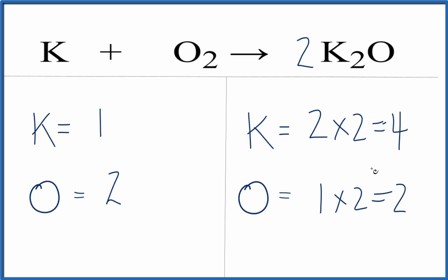That's not a problem though, because we have K all by itself. If we put a four in front of the K, one times four gives us four, which is the same as the four over here.